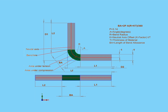Another method for calculating bend allowance uses the K factor, where K is the neutral axis offset. The general principle goes like this: the neutral axes are shown in red in my diagram — they don't change during the bending process. During the bending process, the material inside the neutral axis will compress, and the material outside the neutral axis will stretch. The neutral axis will be closer to the inside bend, which is indicated in blue in my diagram. The more the part bends, the closer the neutral axis will lie to the inside of the part.